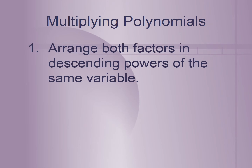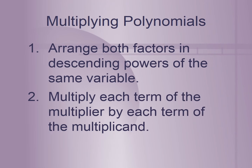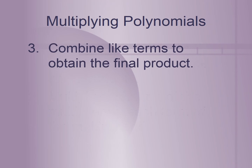The steps to multiplying polynomials: Step 1 — arrange both factors in descending powers, so the highest power comes first. Step 2 — multiply each term of the multiplier by each term of the multiplicand, using the distributive property as many times as you have terms. Step 3 — combine like terms to get your final answer.